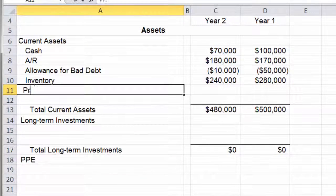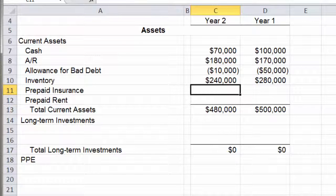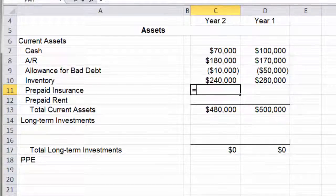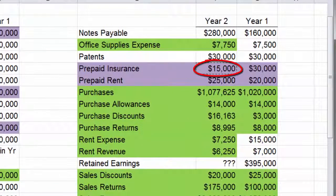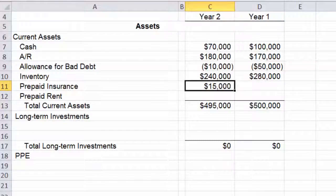And I'm going to click here on this year 2 data. So here in C11, I'm going to link that to the prepaid insurance number $15,000. And now I'm going to cheat. Those numbers were both right next to each other, left to right. And the prepaid rent numbers are also right below prepaid insurance. So I'm actually going to copy that across.